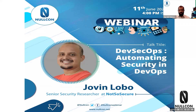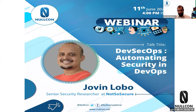Today we have with us Jovin Lobo, and he's going to present a talk on DevSecOps — automating security in DevOps. Jovin is an information security professional working as a senior security consultant at NotSoSecure. He has over nine years of experience specializing in network and application security assessment. In the recent past, he has been exploring the fascinating world of DevSecOps. He has also spoken at conferences like Cocon, Nullcon, GNUnify, and others. So I welcome Jovin on behalf of all of us. The talk duration is about 30 minutes, followed by a Q&A session. You can ask questions using the chat option.